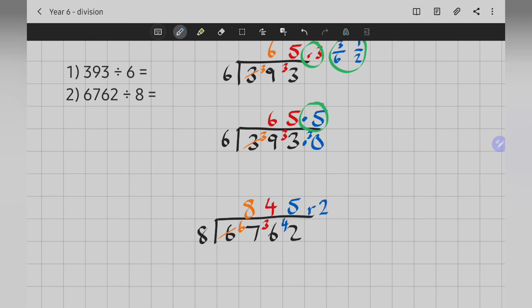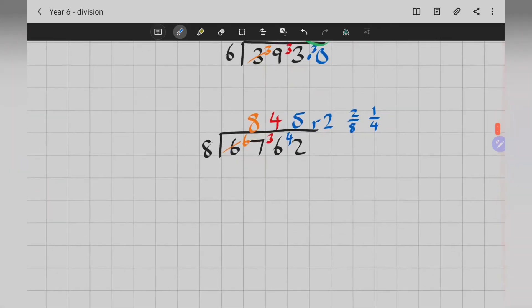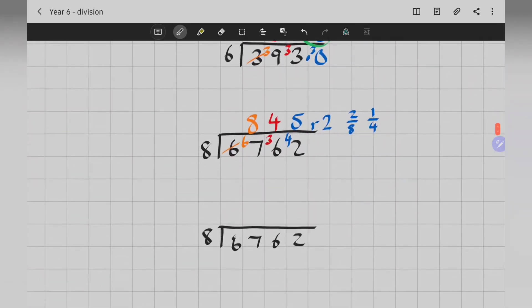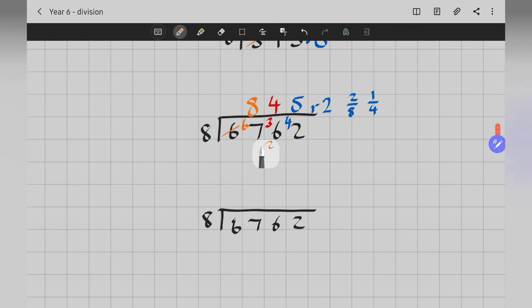Or, instead of remainder 2, you could have shown it as a fraction. 5 and 2 eighths. And 2 eighths can also be simplified into 1 quarter. Let's look at what that was like as a decimal. So, as a decimal, we would add in 8 times there, with 3 left over. 8 into 36 goes 4 times, with 4 left over. And 8 into 42 goes 5 times.